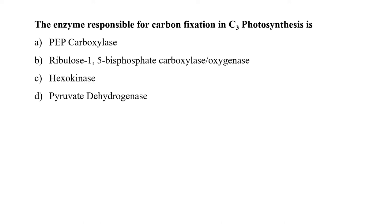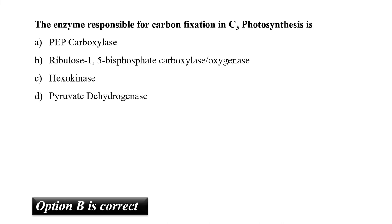The next question is: the enzyme responsible for carbon fixation in C3 photosynthesis is? It is RuBisCO, that is ribulose-1,5-bisphosphate carboxylase/oxygenase. RuBisCO catalyzes the primary carbon fixation in which a 5-carbon sugar phosphate (ribulose-1,5-bisphosphate) and CO2 are converted to two molecules of the three-carbon compound 3-phosphoglycerate. So our correct option is B, that is ribulose-1,5-bisphosphate carboxylase/oxygenase.